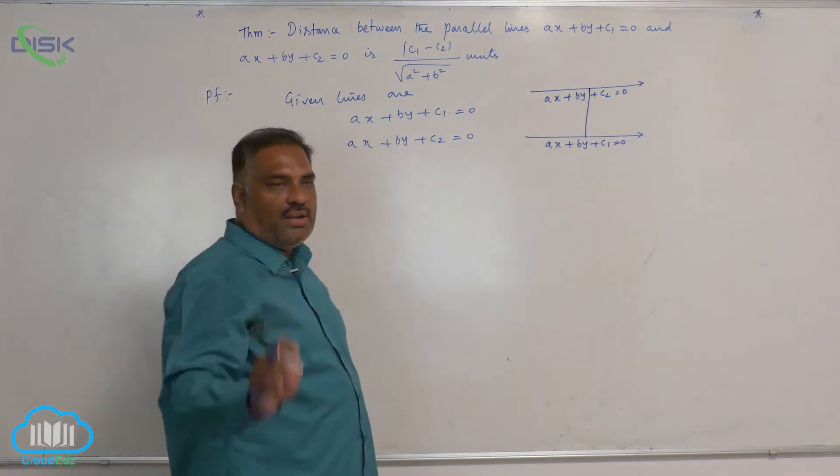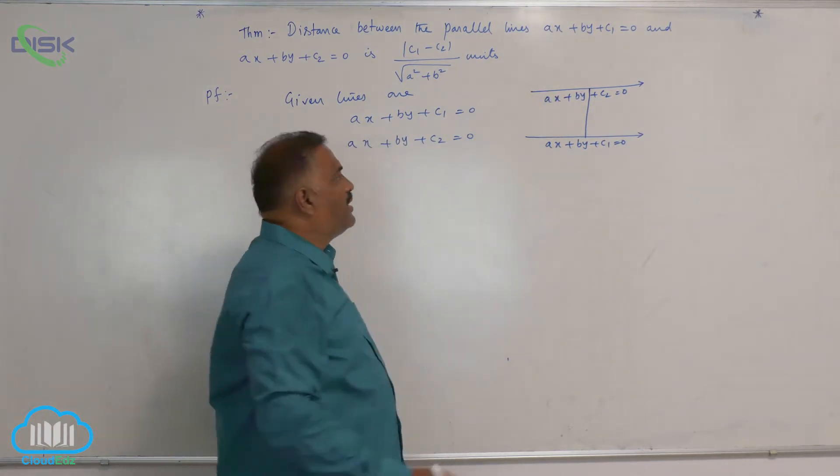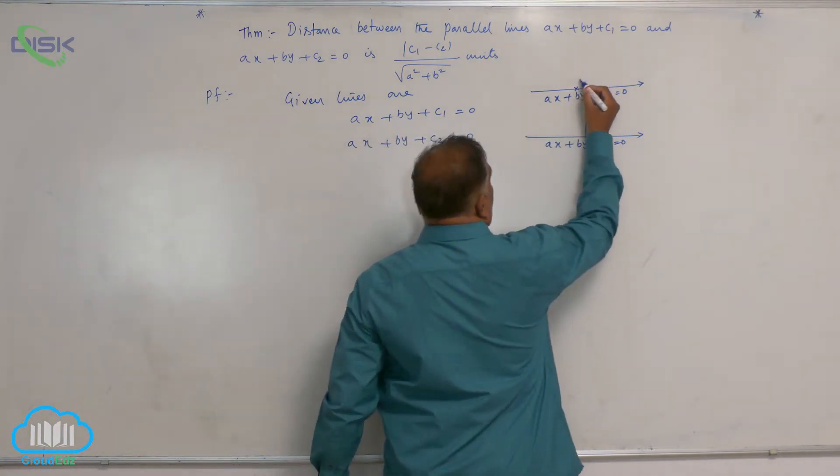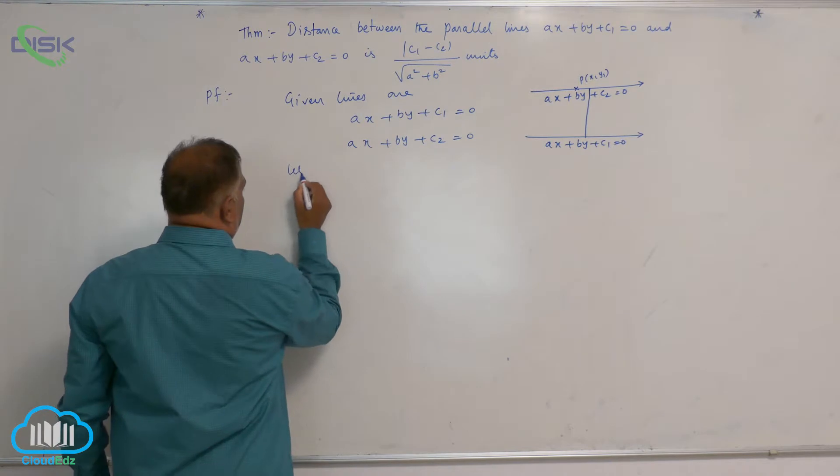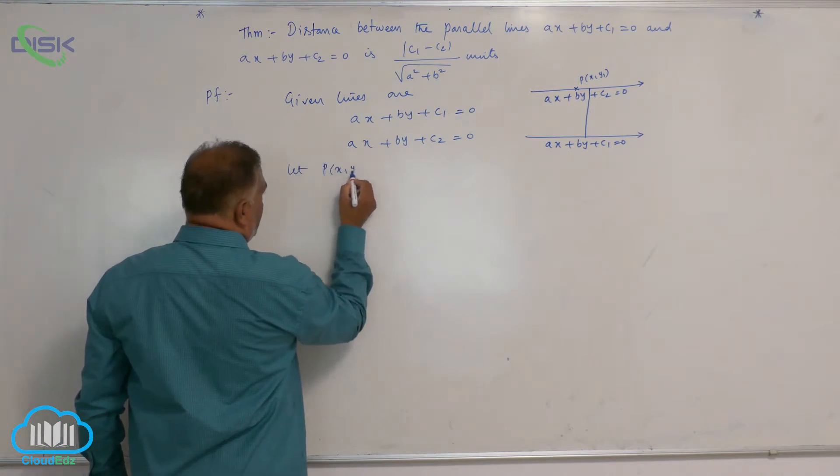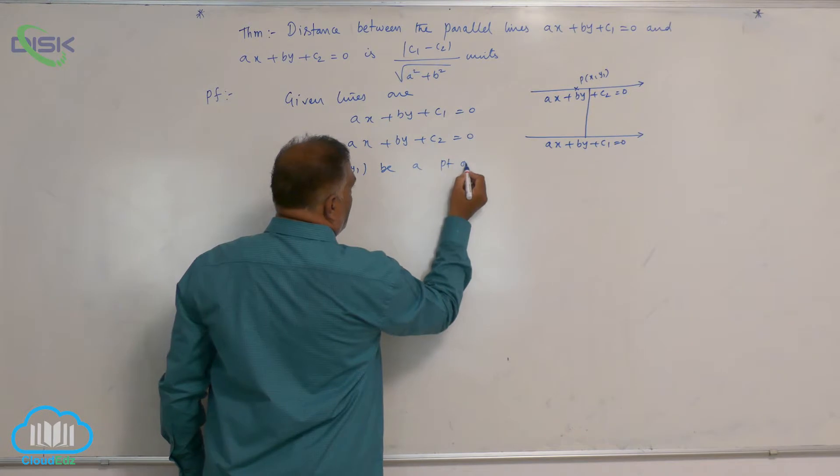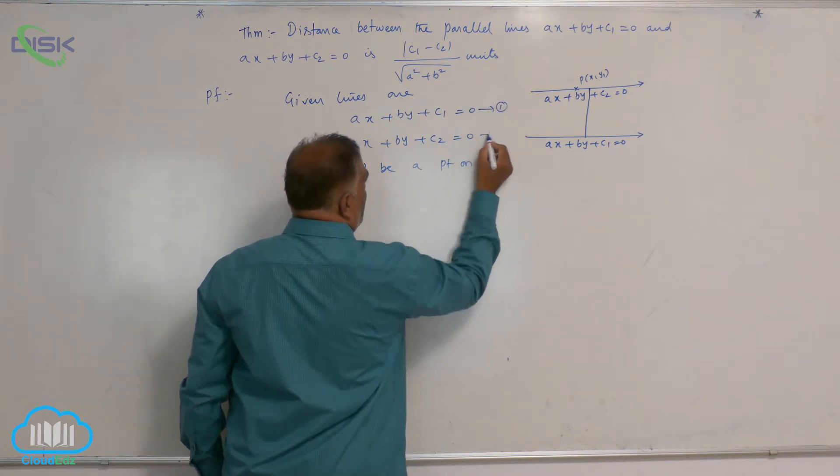Select a point on either line 1 or line 2. Let us take a point here, PX1 comma Y1. So let PX1 comma Y1 be a point on, let us give numbers 1 and 2.